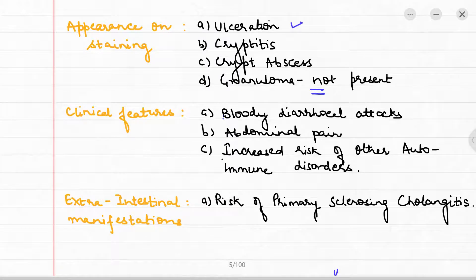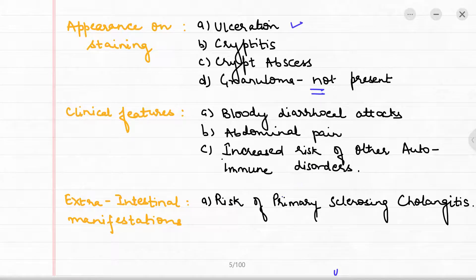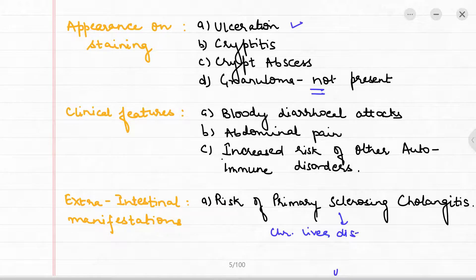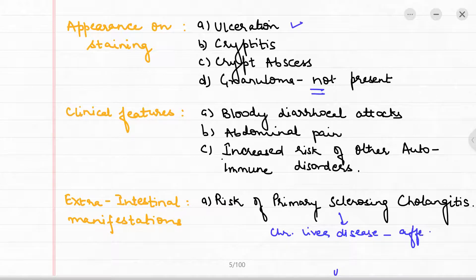Clinical features of ulcerative colitis include bloody diarrheal attacks and abdominal pain. There is also an increased risk of other autoimmune disorders. An important extra-intestinal manifestation is primary sclerosing cholangitis — a chronic liver disease that leads to inflammation and fibrosis of the intra- and extra-hepatic bile ducts.